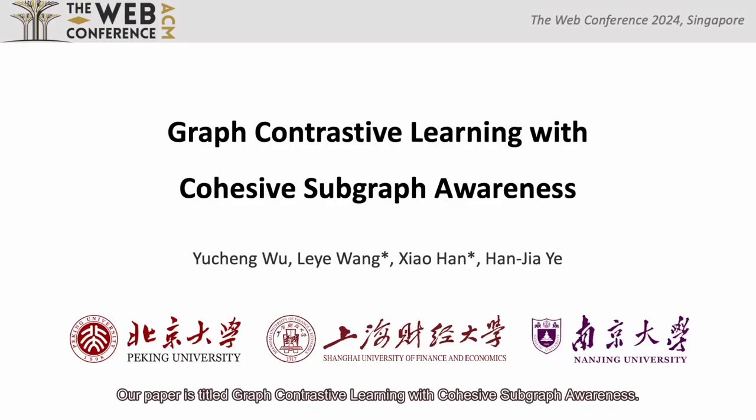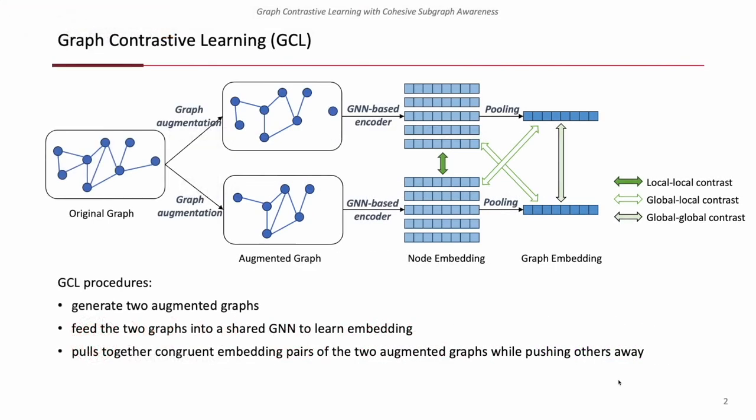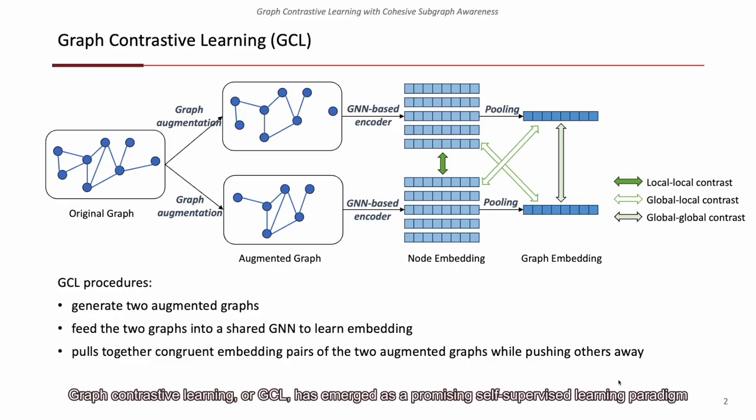Our paper is titled Graph Contrastive Learning with Cohesive Subgraph Awareness. It is a study in the field of graph contrastive learning. Graph contrastive learning, or GCL, has emerged as a promising self-supervised learning paradigm for acquiring graph and node embeddings in various applications.